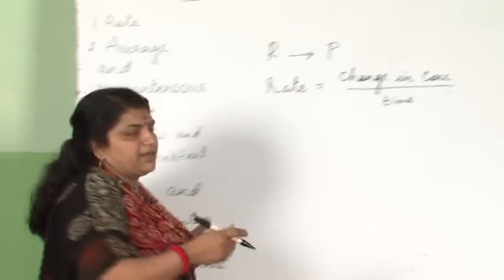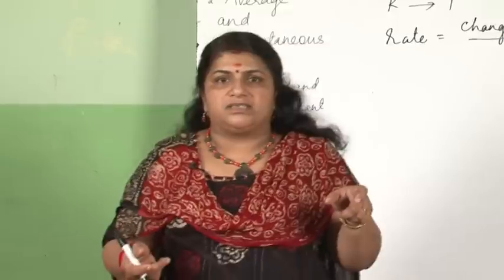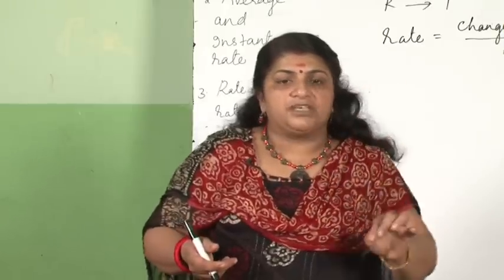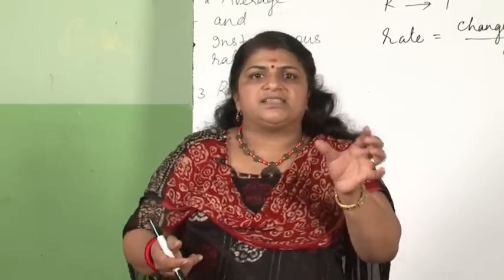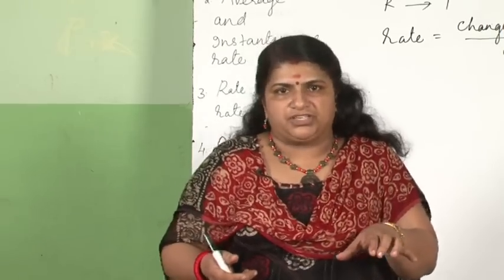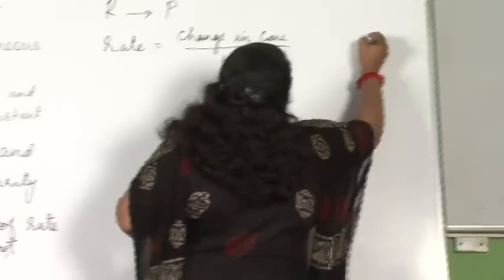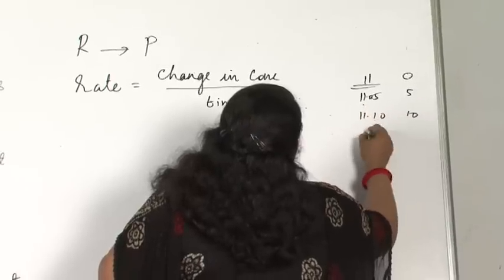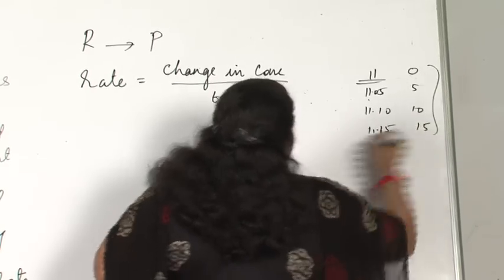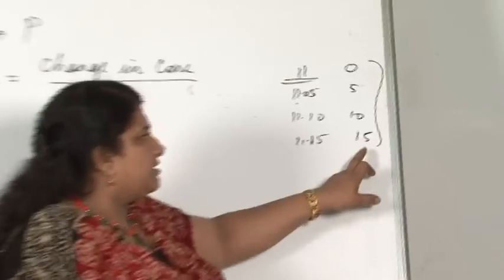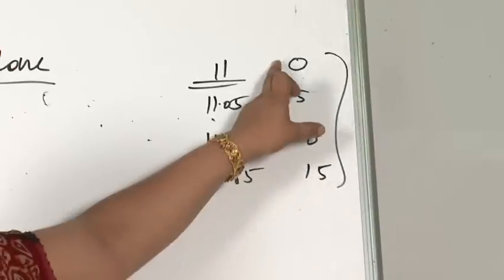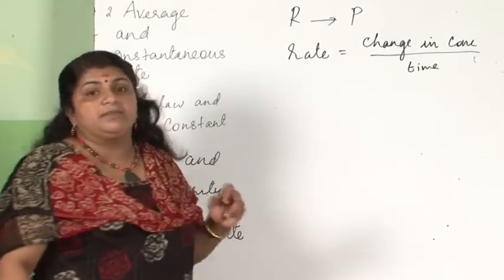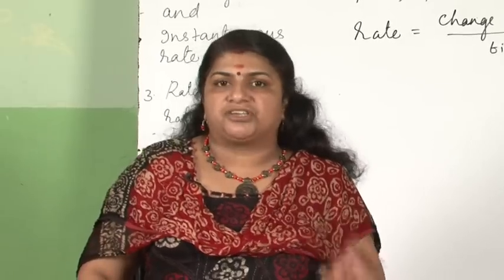The change in time means: suppose you are mixing two reactants at 11 o'clock — that is taken as time zero. We observe the chemical reaction from 11 to 11:15, so that is the time interval. 11:05 is 5 minutes, 11:10 is 10 minutes, 11:15 is 15 minutes. The time is the interval with which you are observing or measuring the data.